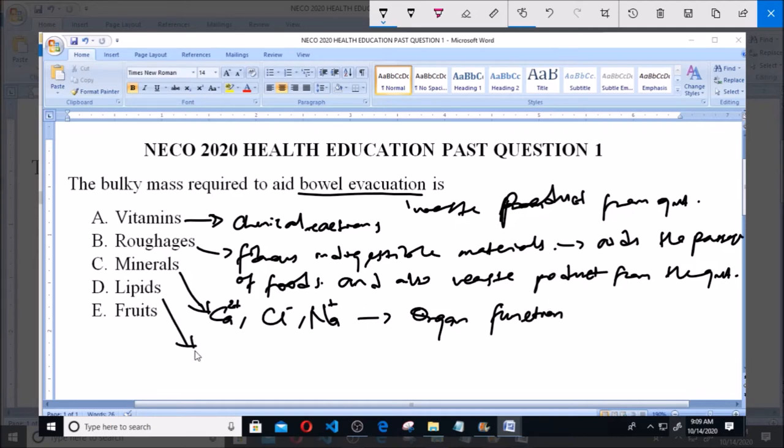Option D says lipids. Lipids is a class of food consisting of fats and oil.